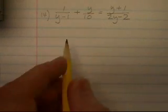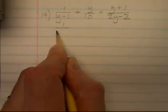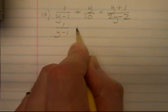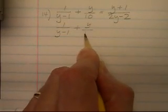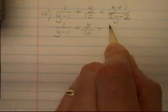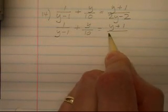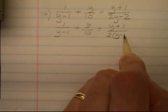How are we going to do this? All right, well I see I have three fractions here. This is 1 over y minus 1 plus y over 10, and then I'll factor the 2 out of this denominator. That's 2 times the quantity y minus 1.